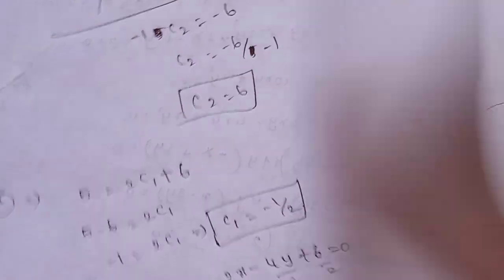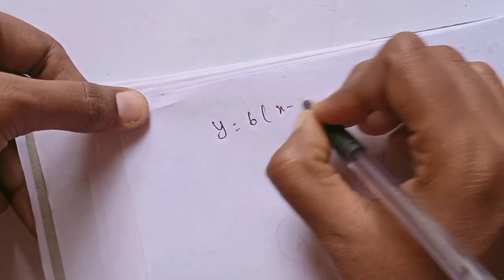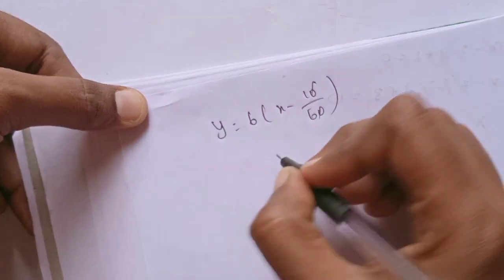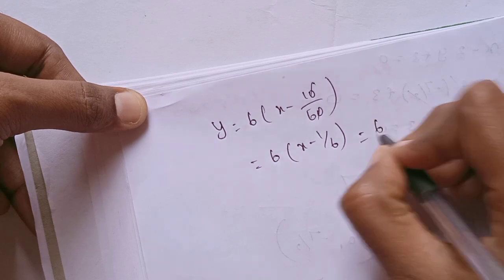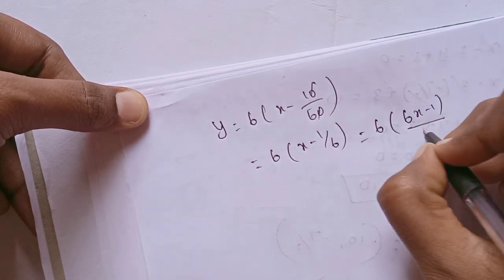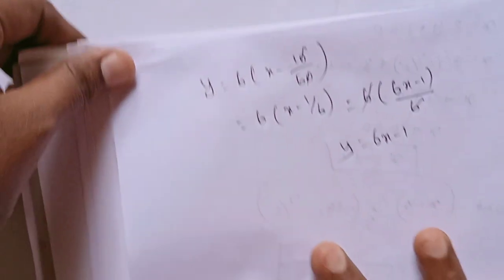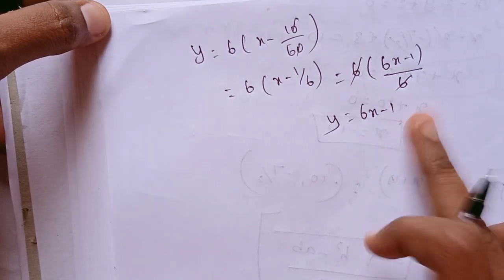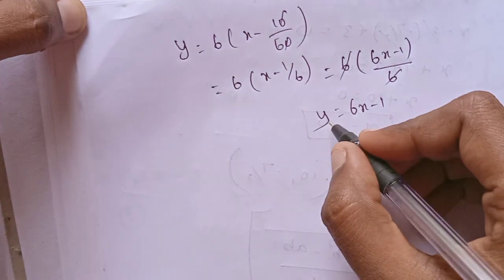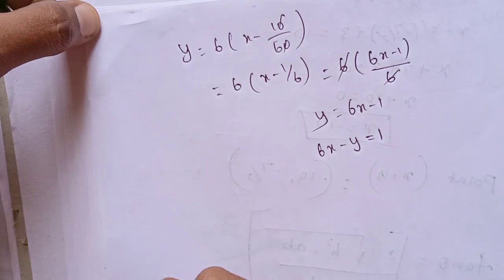First equation: y is equal to 6 and x minus 10 by 6. Cancel — 6 and x minus 1 by 6. Cross multiply: 6 and x minus 1 by 6. Add it to get 6 and x minus 1. So y is equal to 6 and x minus 1. Rearranging: 6x minus y is equal to 1.